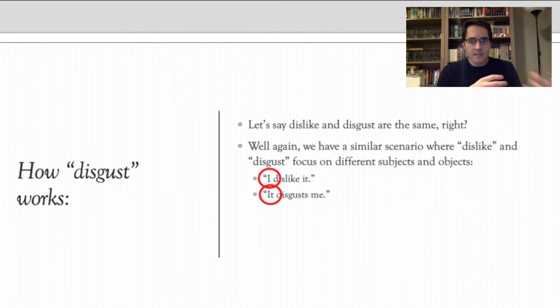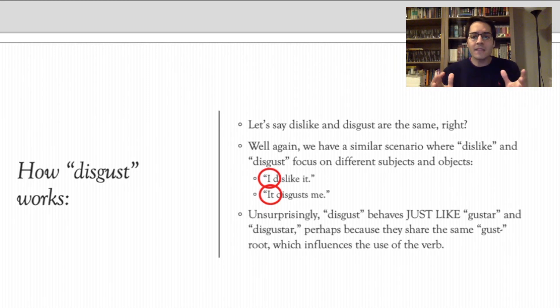I dislike is an expressing of what I feel about it. And so I'm the actor and the subject. It disgusts. It is a thing that causes something in me. So it is the focus of the sentence, the subject, and I'm the object. Do you notice that now? The it is at the beginning of disgust, and it's at the end of the sentence in dislike. They switch places.